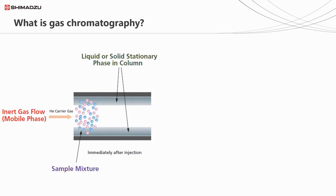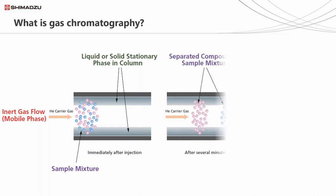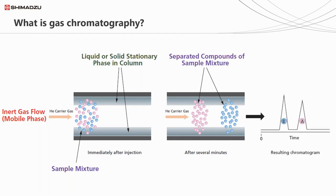Here's the same example in a bit more detail. We have a section of our column, with a mixture of chemicals - our sample - coming in at the start. As the carrier gas, the mobile phase, pushes the sample down the column, it starts to separate. In many GCs, the carrier gas we use is helium, as in this example. You can see that over several minutes the chemicals start to separate out, and by the end we now have a chromatogram. The different chemicals are being detected by some kind of detector at the end of the column. Because the blue chemical was moving down the column more quickly due to its better affinity to the mobile phase, it eluted from the column first.